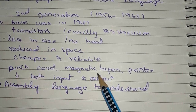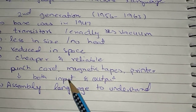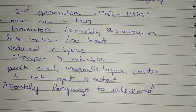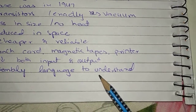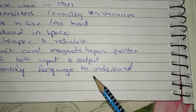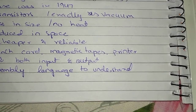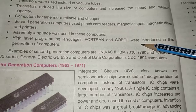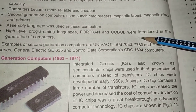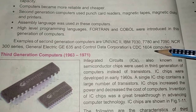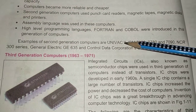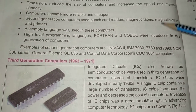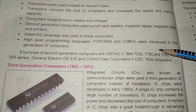Input and output devices included magnetic tapes and printers. Assembly language and high-level programming languages were used. High-level languages like FORTRAN and COBOL were introduced in the second generation. Examples of second generation computers include UNIVAC, IBM, and NCR series — you can search these on the internet.